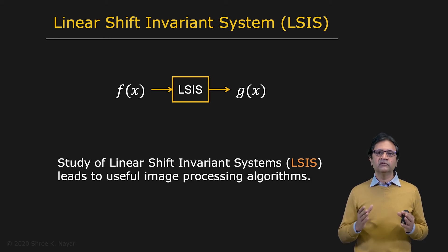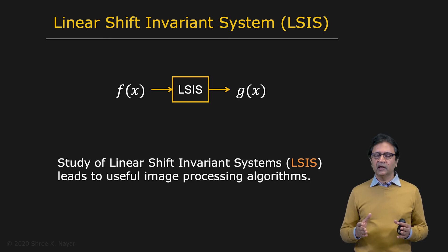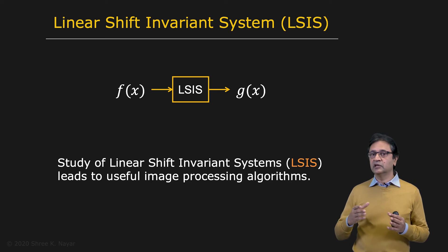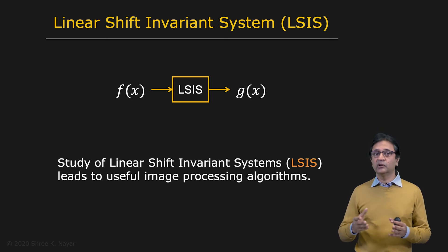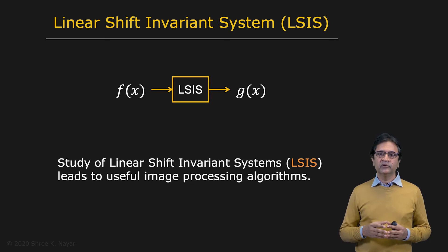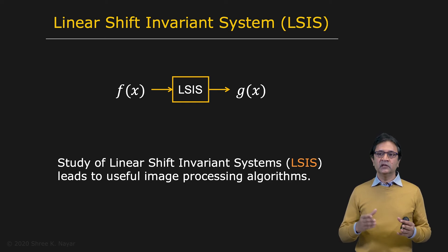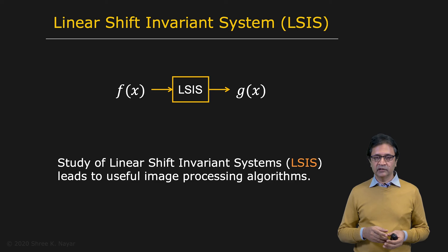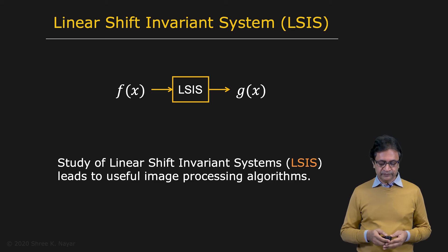Many of the things that we do in computer vision, and for that matter signal processing in general — it could be audio processing — happen to be related to linear shift invariant systems, or can be described as linear shift invariant systems.